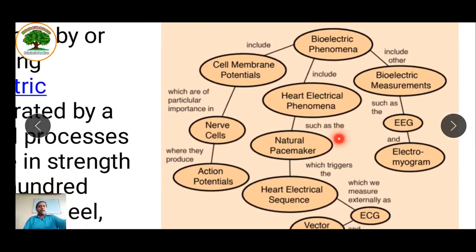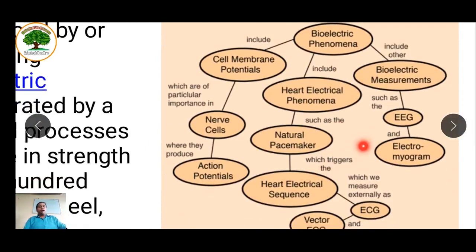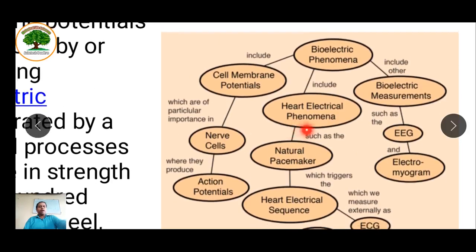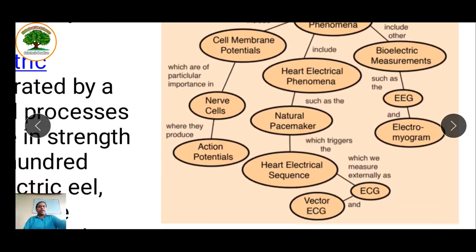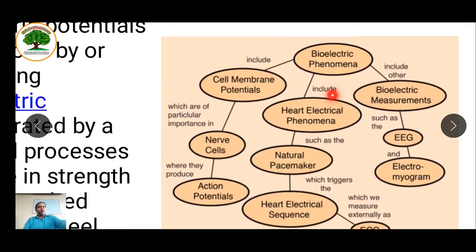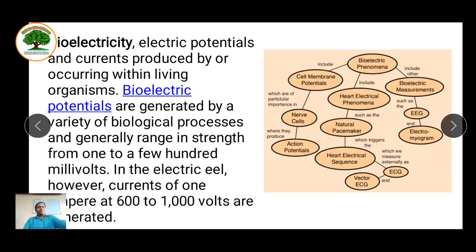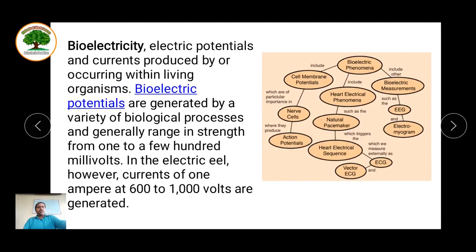The next is heart electrical phenomena, which generally happens in the heart. The electric impulses produced by the heart are very important and are due to the natural pacemaker — the SA node present in the heart. These electrical sequences help in the working of the heart. Another bioelectric measurement is the EEG, or electromyogram, which happens in muscle cells and helps regulate their action.